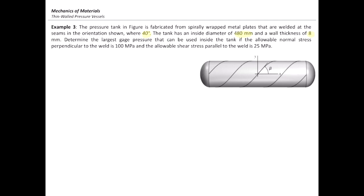Let me write down the data. Beta is 40 degrees, the diameter is 480 millimeters, which means the radius is 240 millimeters, and the thickness is 8 millimeters. The allowable normal stress is 100 megapascal and the allowable shear stress is limited to 25 megapascal.